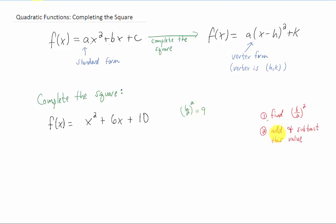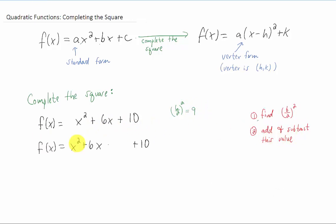What we're going to do with this 9 is we're going to add and subtract that 9. I'm going to copy the function down here, and I'm going to add 9 here, and I'm also going to subtract 9 here. Now that's a legal operation. These first three terms here, I'm going to group together, and then the minus 9 plus 10, I'm going to combine those two terms, and that's going to leave us with just a plus 1.